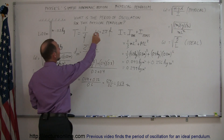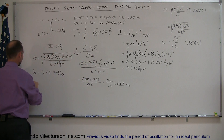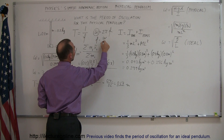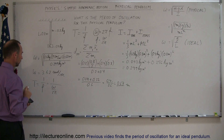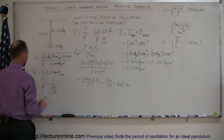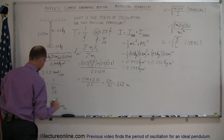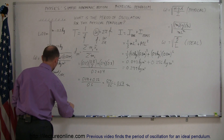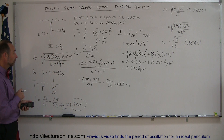We now know omega, but we need the period. The period equals 1 over frequency, and frequency equals omega divided by 2π. So the period equals 2π over omega, which is 2π divided by 3.62 radians per second. Taking the inverse and multiplying by 2π gives 1.74 seconds. The period of this physical pendulum is 1.74 seconds.